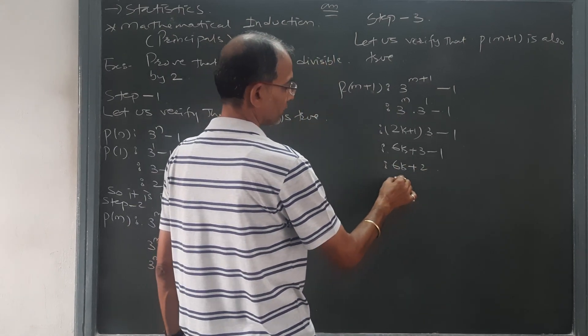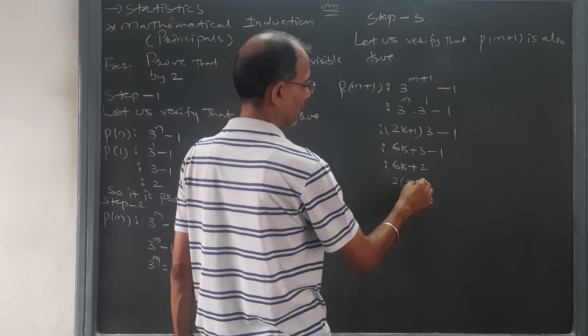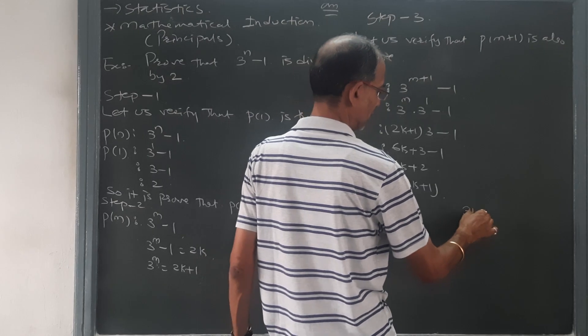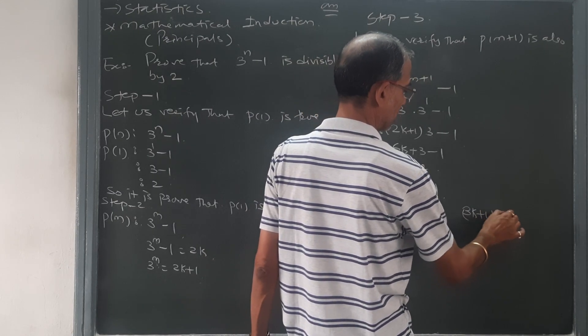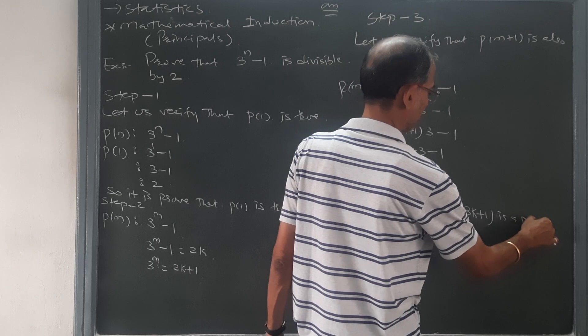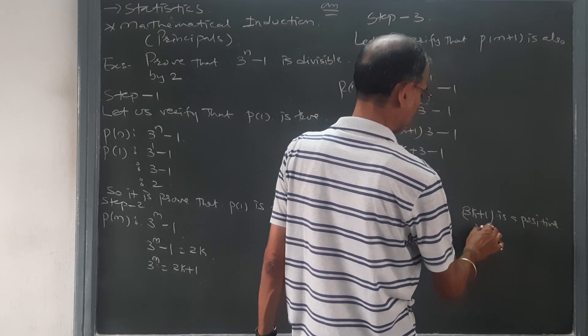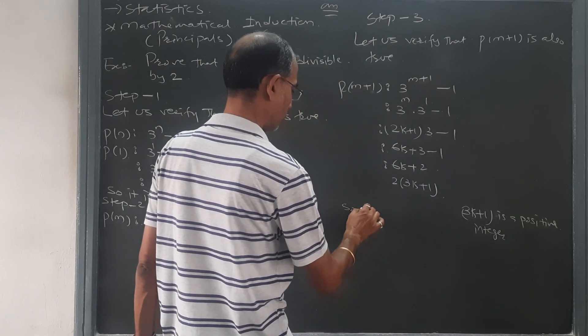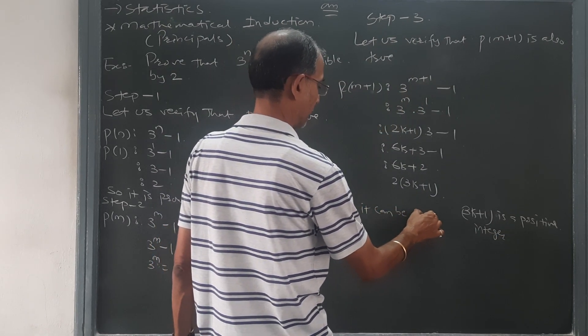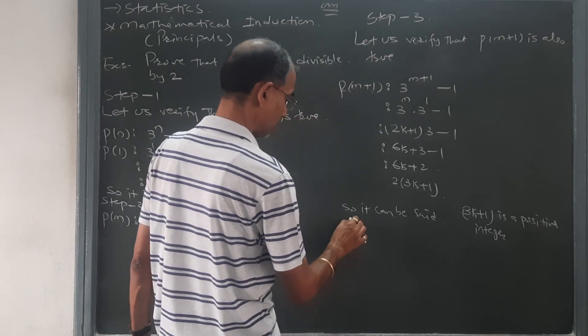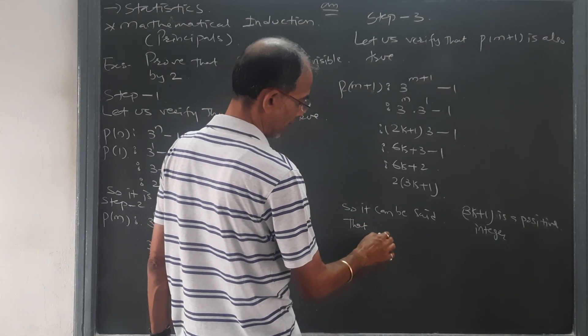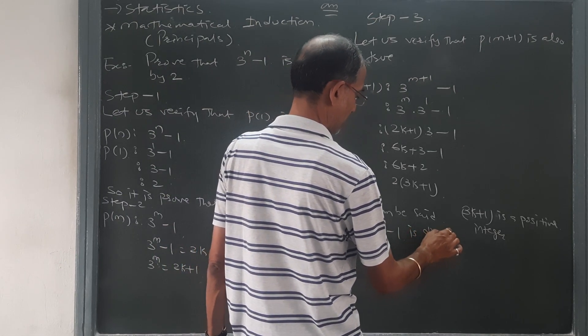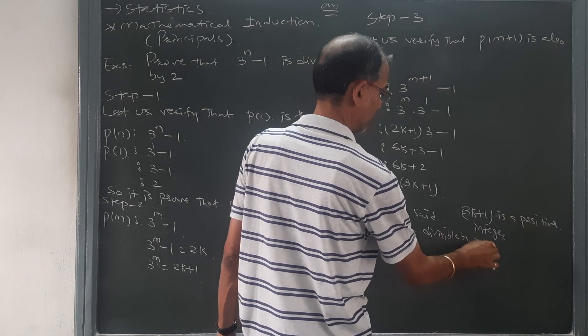If I bring 2 as a common factor, this will become 2 times (3k plus 1). Now, 3k plus 1 is a positive integer, so it can be said that 3 raised to n minus 1 is divisible by 2.